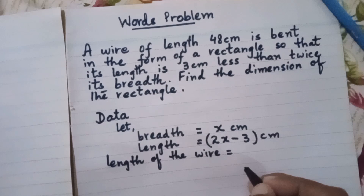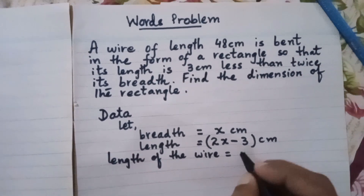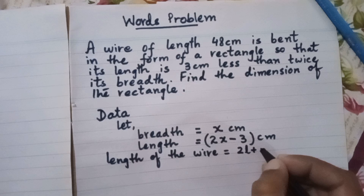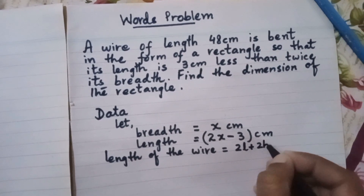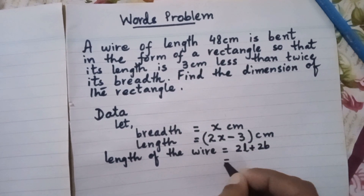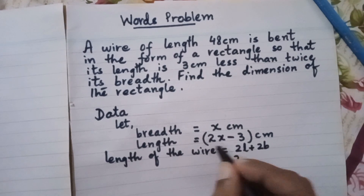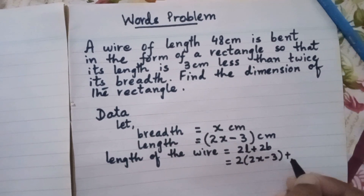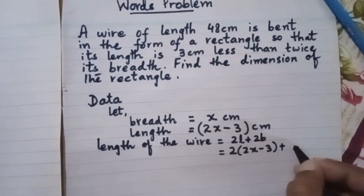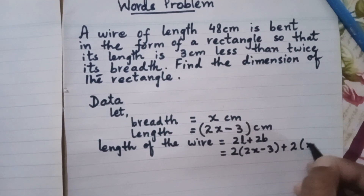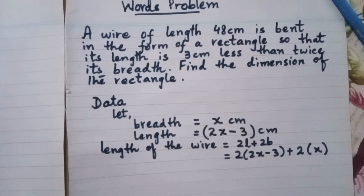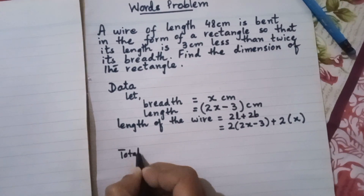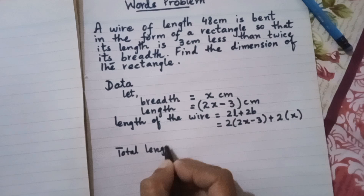The total length of the wire is 48 centimeters. For a rectangle, we draw the diagram: there are two sides of length and two sides of breadth, so the perimeter is 2l plus 2b. Here, length is 2x minus 3 and breadth is x.